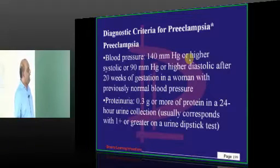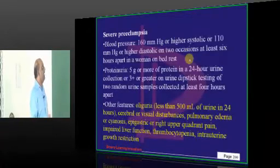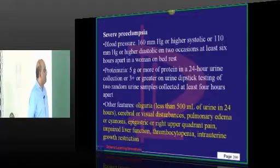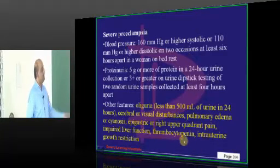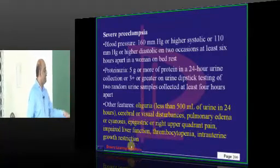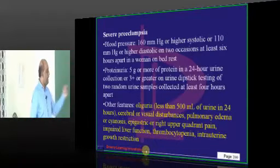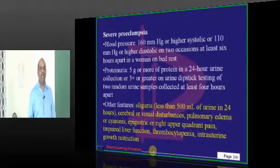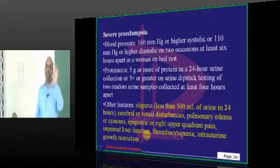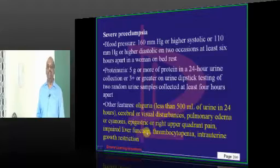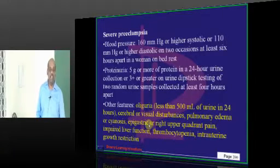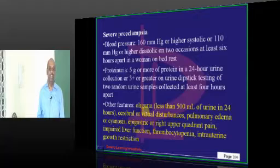BP and proteinuria are included, and oliguria, cerebral and visual disturbances, pulmonary edema, epigastric pain, impaired liver function, thrombocytopenia, and IUGR — they are all included. No pedal edema is included in the diagnostic criteria. But common sense as a house surgeon associates pedal edema with pre-eclampsia, which is wrong.